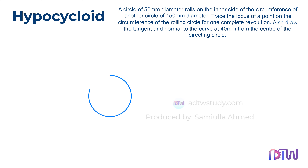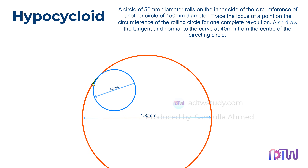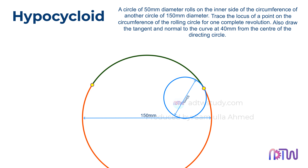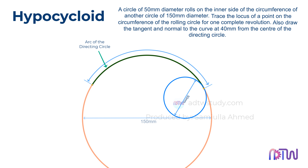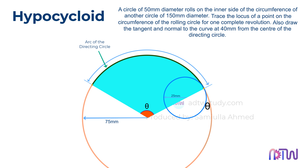The question says a circle of 50 mm diameter rolls on the inner side of the circumference of another circle of 150 mm. Therefore, we first need to draw the arc of the bigger circle inside which the smaller circle is rolling. To get the exact length of the arc required for the smaller circle to roll for one complete revolution, we need to find this angle. This angle is given as theta equals the ratio of the radius of the rolling circle to the radius of the bigger circle, multiplied by 360 degrees.